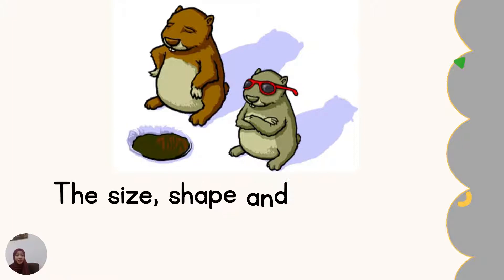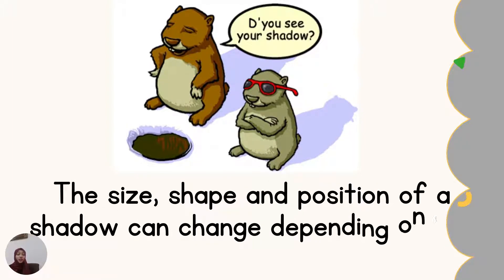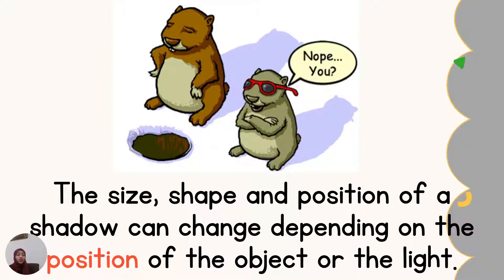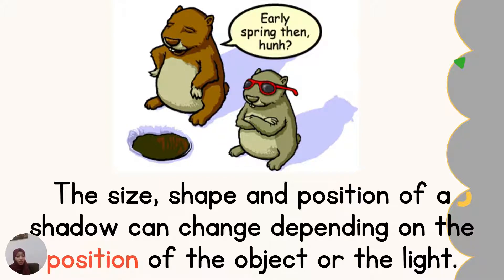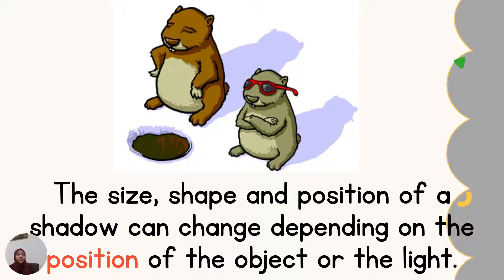The size, shape, and position of a shadow can change depending on the position of the object or the position of the light. So the position of the object or the position of the light when forming a shadow can change the size, shape, and also the position of the shadow itself.